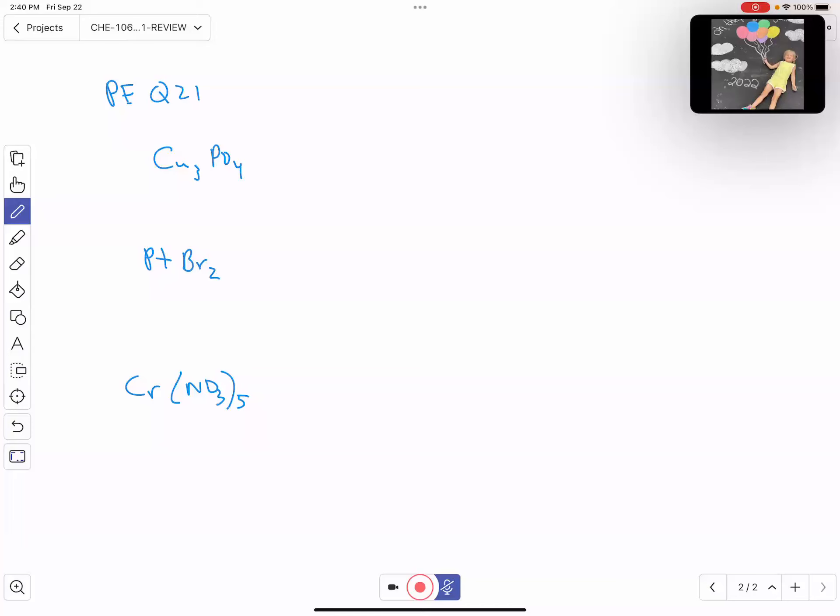Because they're transition metals - copper, platinum, chromium are all transition metals - we're going to need to use Roman numerals here.